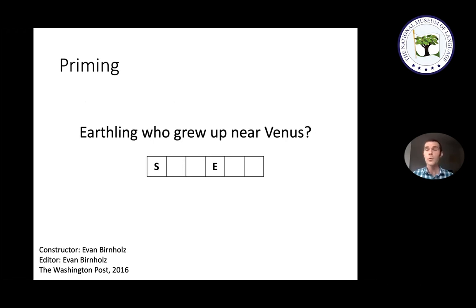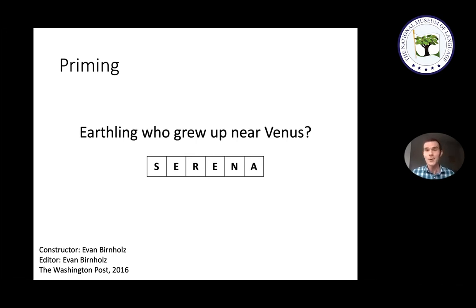So how is priming manipulated in crossword clues? Here's one example: the clue is 'Earthling who grew up near Venus.' Even without special priming, your first association with 'Venus' is probably the planet. Then the word 'earthling' adds priming that further strengthens that association — it makes you expect words related to science fiction or astronomy. So once you've been primed that way, you'll interpret 'Venus' as the planet without a second's hesitation. But that's a misdirection — the correct answer requires interpreting Venus as the tennis player, so the answer is SERENA, her sister.